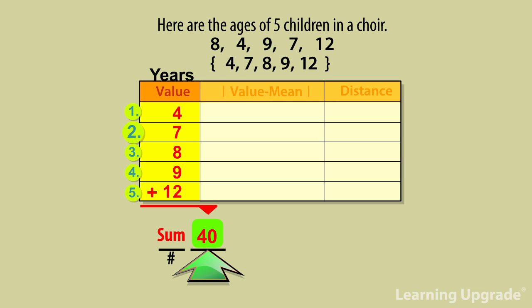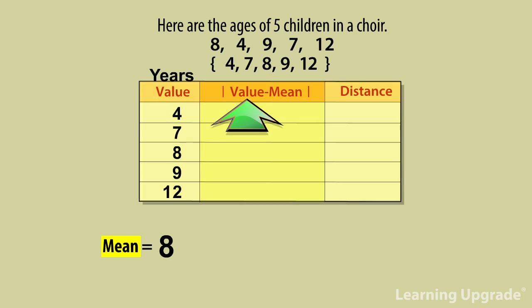Divide 40 years by the number of students, 5. The mean is 40 divided by 5 equals 8 years. Find the absolute value of the difference between each data value and the mean.